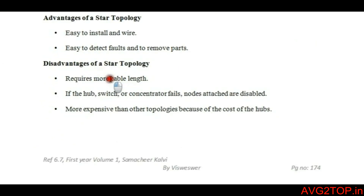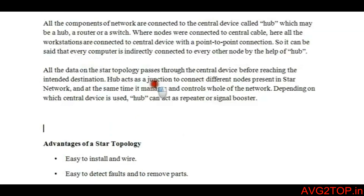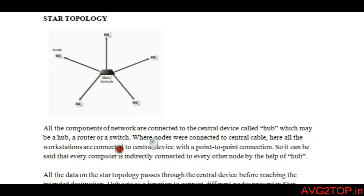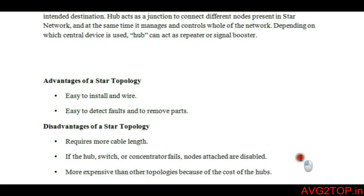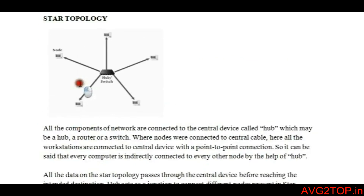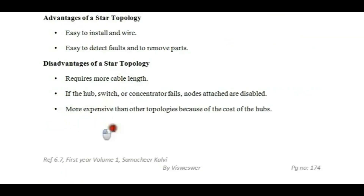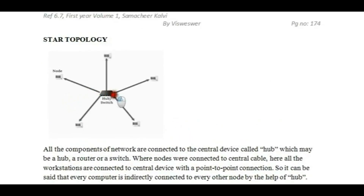Advantages of star topology: it is easy to install wires and easy to detect faults. Disadvantages: it requires more cables since all devices connect to one single point. If the hub, switch, or router fails, all computers and nodes become disabled. It is also more expensive because of the cost of buying a hub, switch, or router.